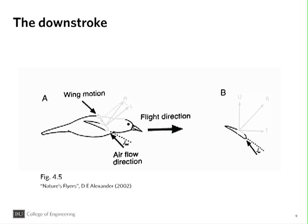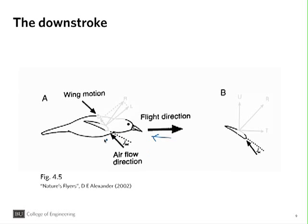Let's explain the two phases of flapping motion — the downstroke first. The downstroke is the most important for generating aerodynamic forces. We combine the flight direction of the bird moving forward with the instantaneous downward velocity of the wing at the midpoint of the downstroke. Like in the case of the propeller, the airfoil is moving downward while the bird moves forward, so with respect to the wing we have two airflows: one moving toward the bird and one moving upward. These add up to a direction inclined, as shown by this arrow — the relative wind with respect to the wing.